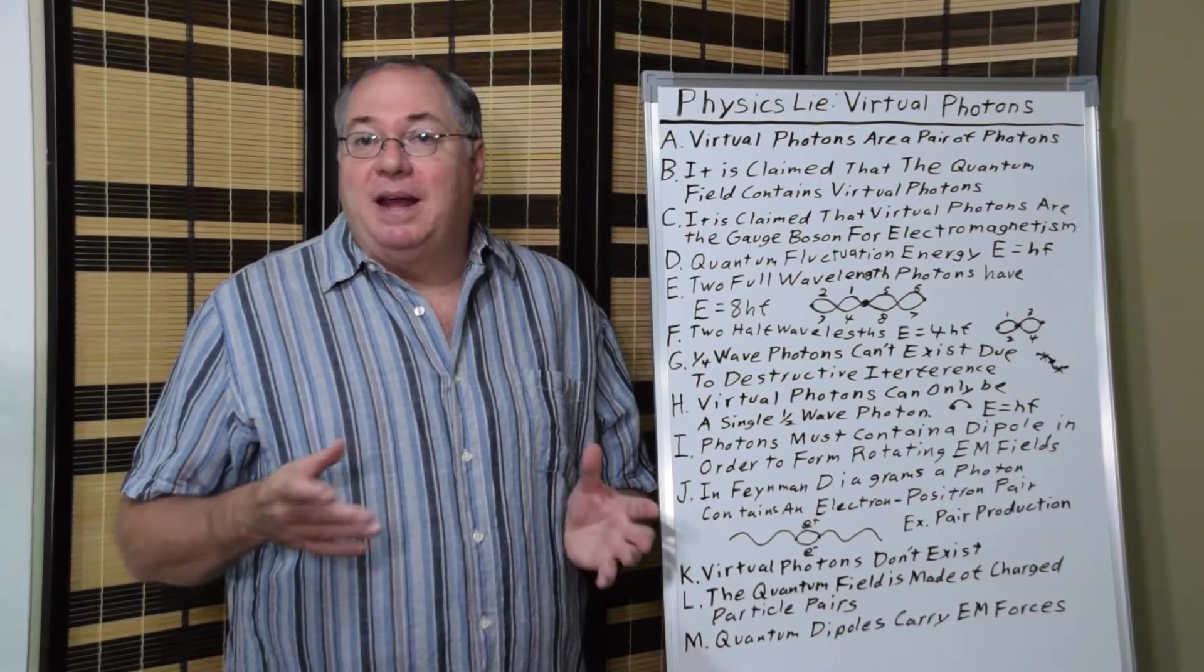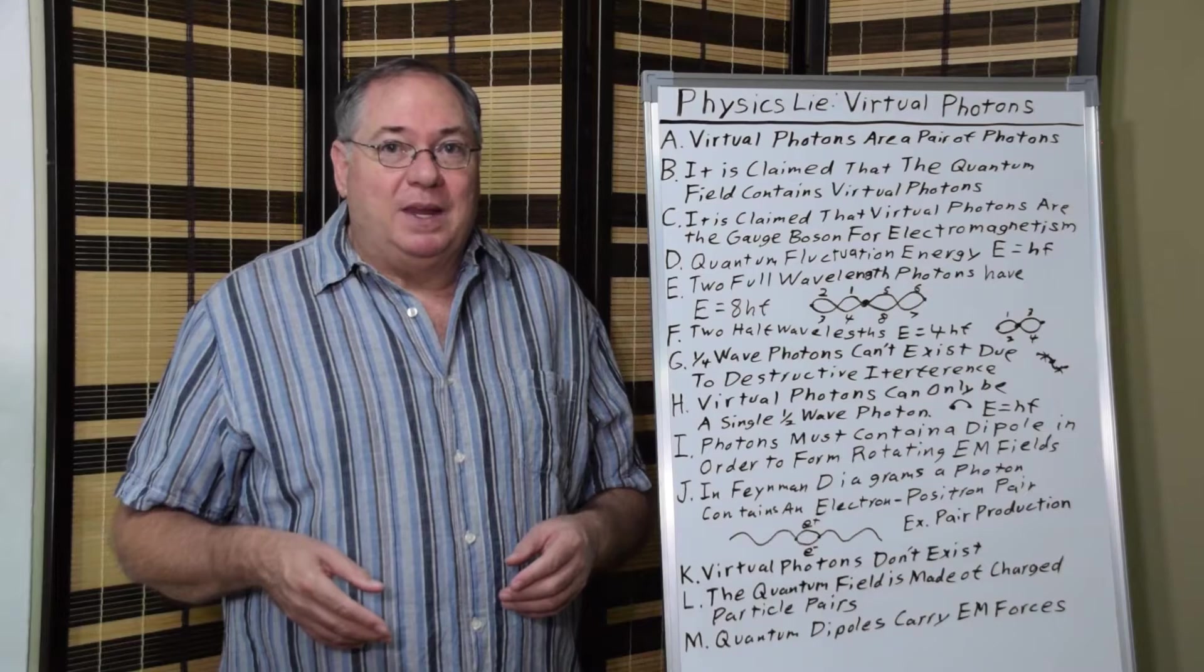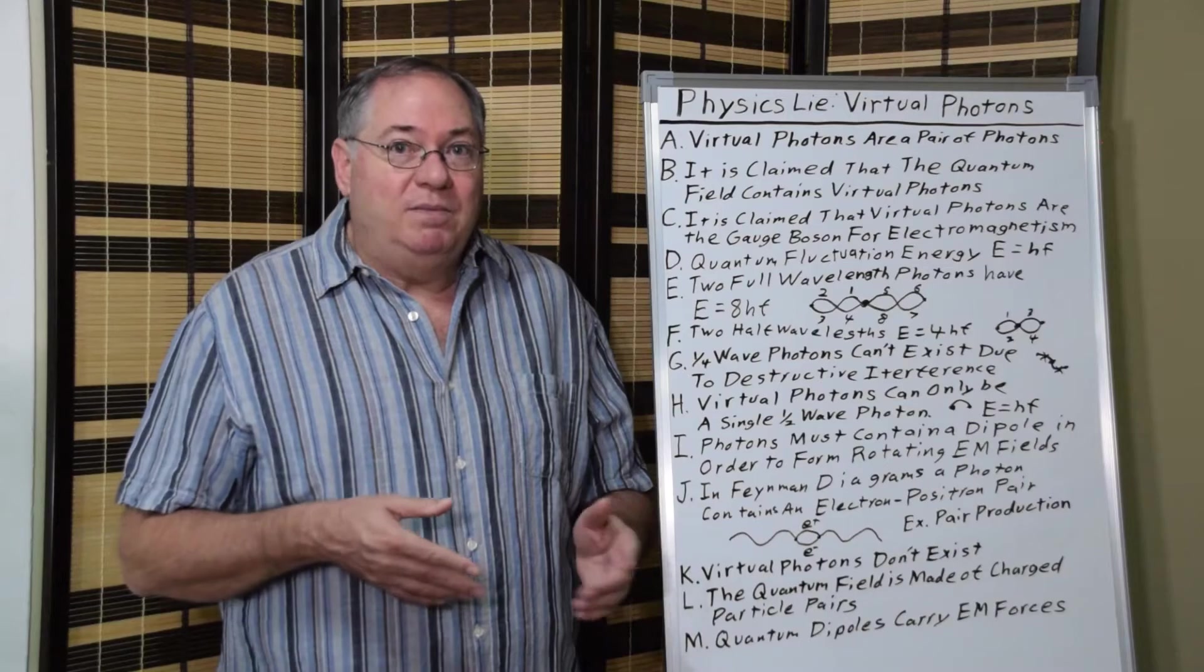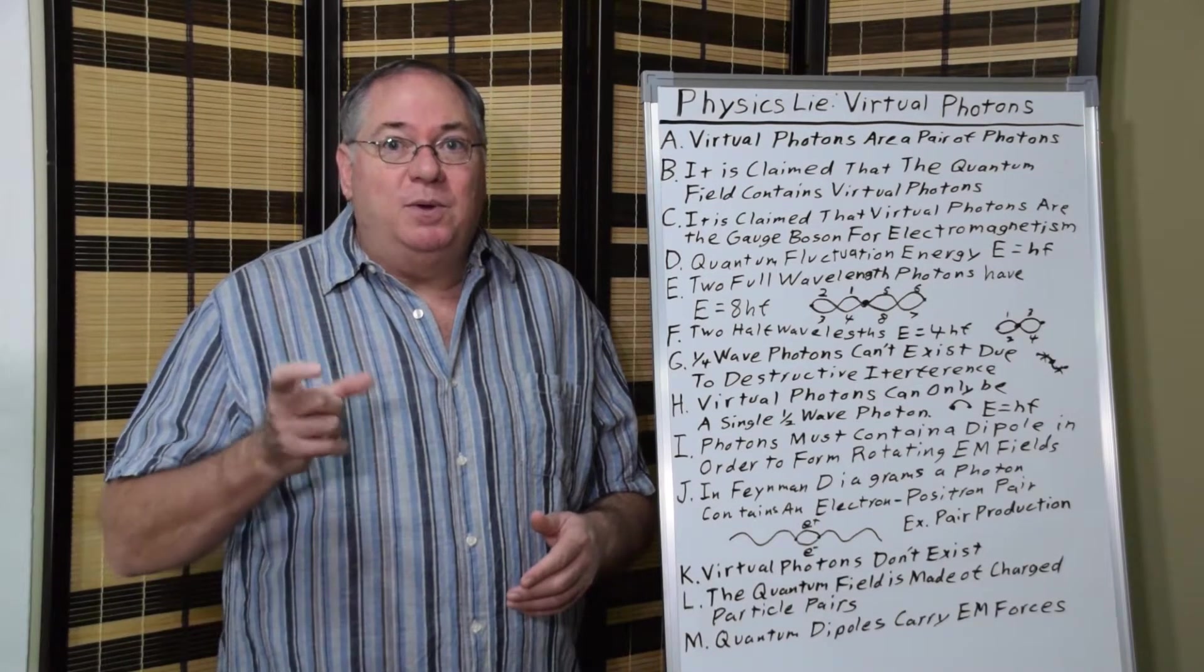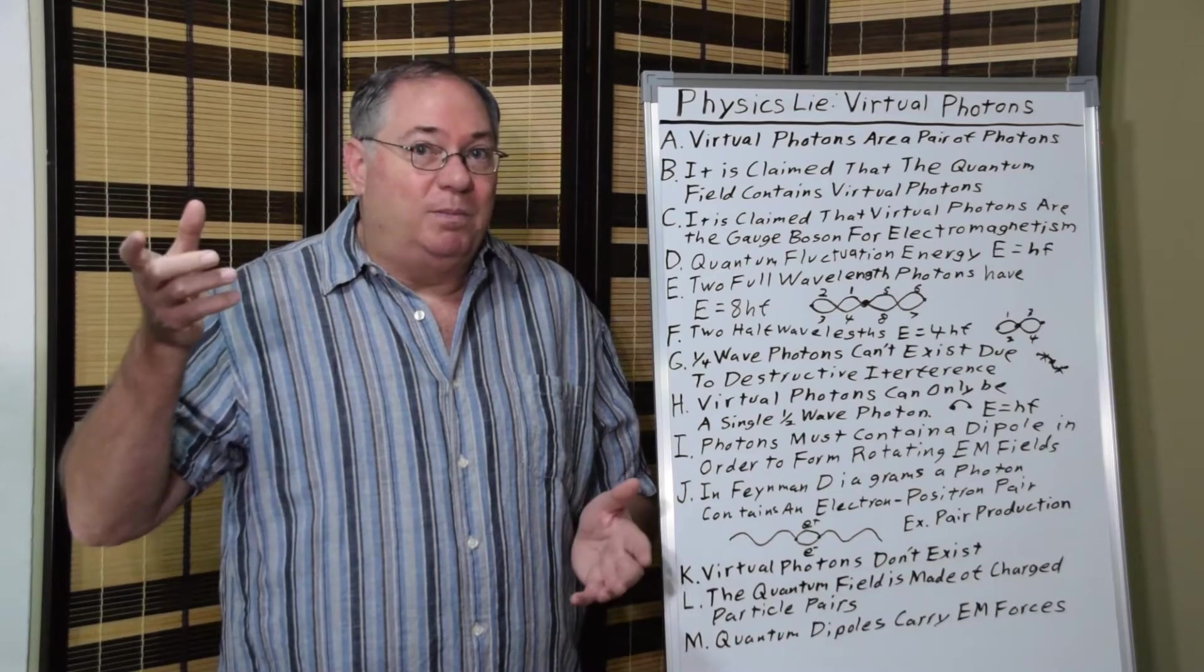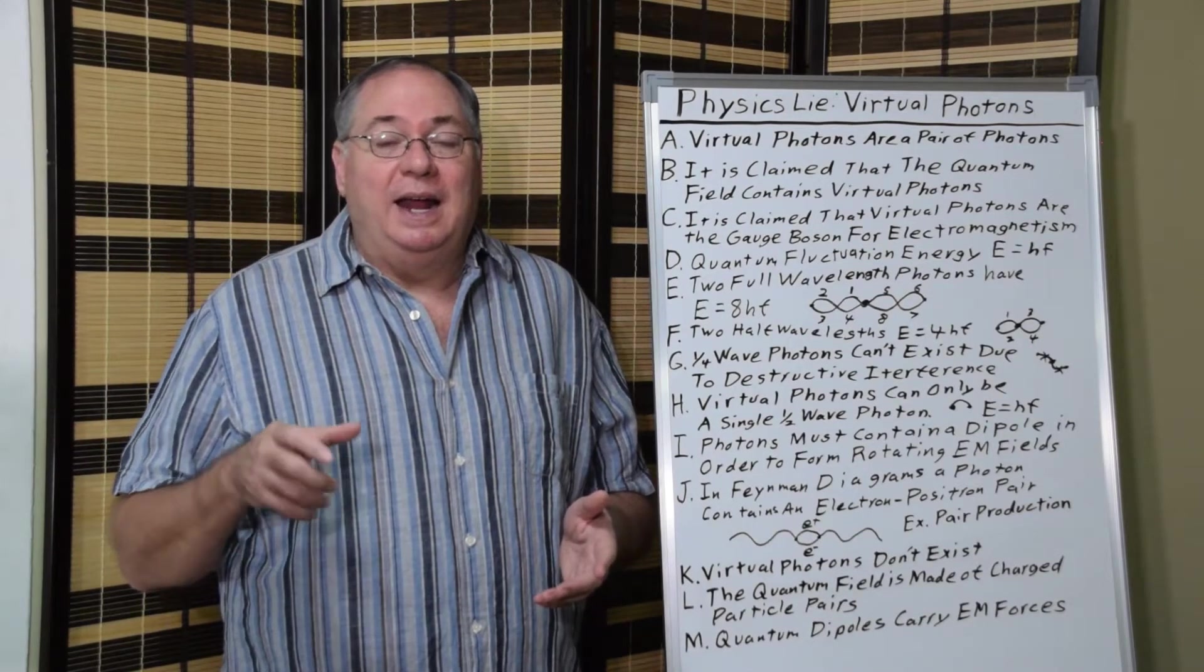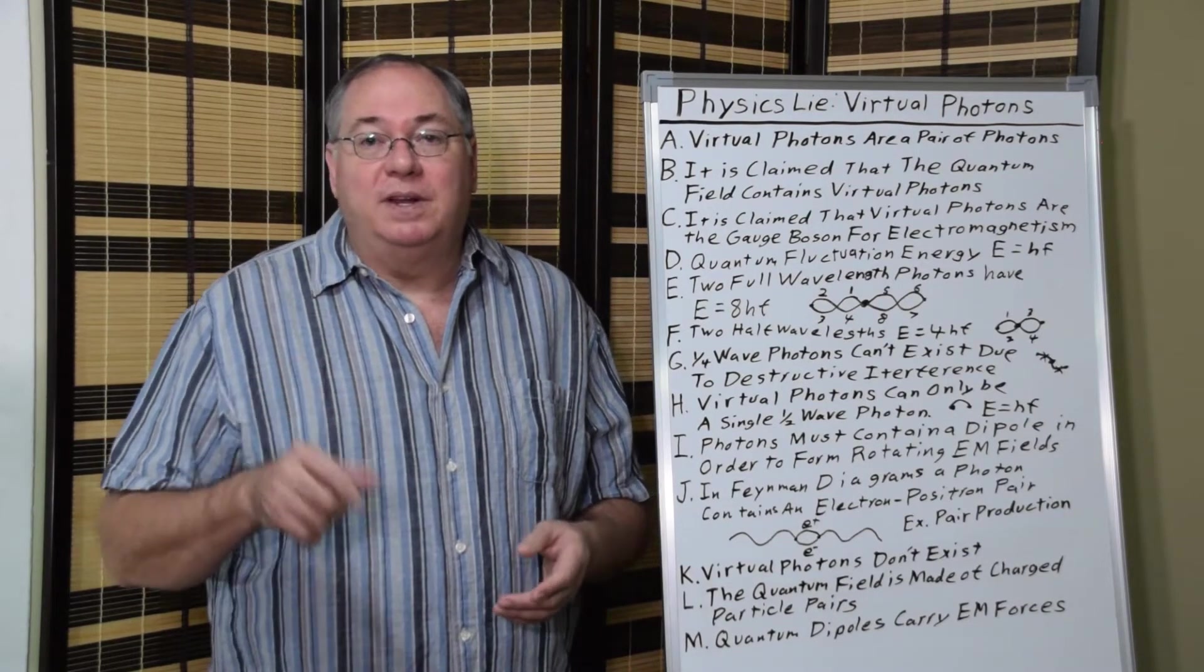And then we have a similar thing with electromagnetic theory. Electromagnetism is propagated by the quantum fluctuations. These quantum dipoles are polarized, form electric fields, and when they rotate they form quantum magnets, and once they're magnetized they can organize themselves with magnetic fields.